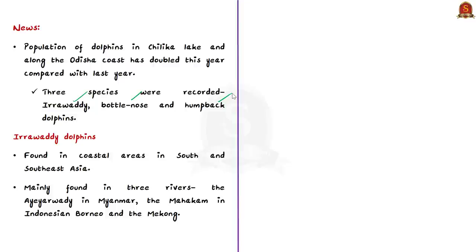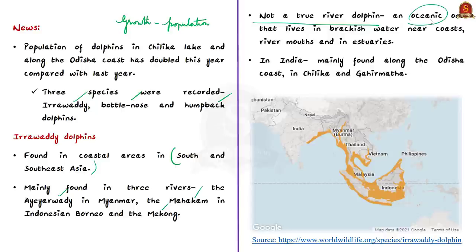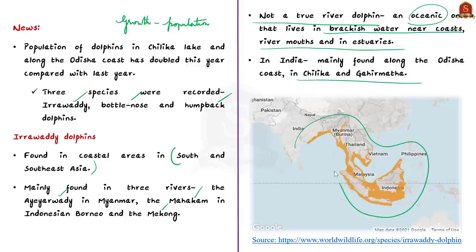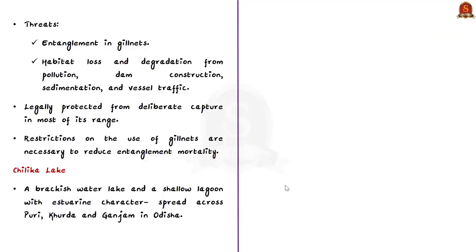We know that Irrawaddy dolphins are found in the coastal areas in the south and southeast part of Asia. They are mainly found in three rivers, which includes the Ayeyarwady in Myanmar, the Mahakam in Indonesian Borneo and the Mekong. This Irrawaddy dolphin is not a true river dolphin, but an oceanic one that lives in the brackish water near coasts, river mouths and in estuaries. When you take India, they are mainly found along the Odisha coast in Chilika and Gahirmatha. Have a look at the map to understand its habitat in a better way. The main threat to the Irrawaddy dolphin is the entanglement in gillnets. Habitat loss and degradation from pollution, dam construction, sedimentation and vessel traffic are additional concerns. Also, these dolphins are revered in many parts of Asia. On moving further, this Irrawaddy dolphin is legally protected from deliberate capture in most of its range. Specially protected areas have been designated in several areas in this regard. Also, the restrictions on the use of gillnets are necessary to reduce entanglement mortality. The use of non-entangling and more selective gear is to be encouraged.